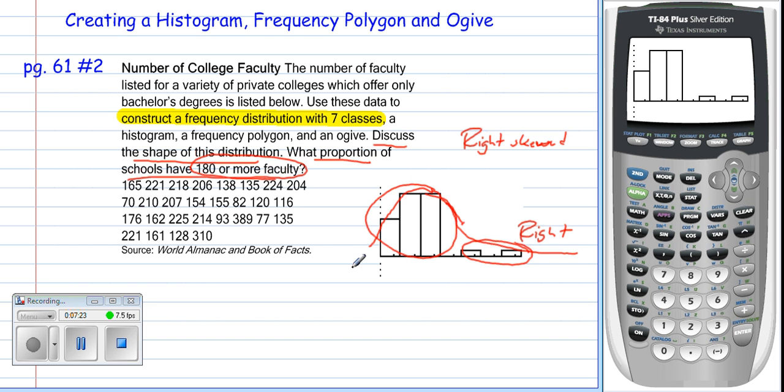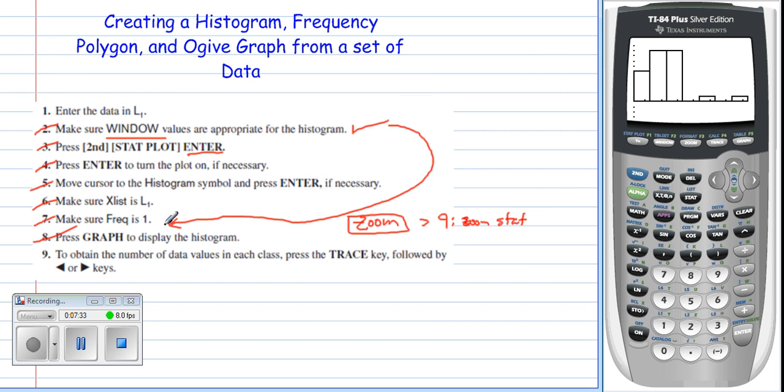So now we've discussed what that means. So now let's go to what proportion of the school has 180 or more faculty. That takes us back to number 9. They want us to press the trace key. So when I press the trace key, what that does for me is it says in this first bar of the histogram, our lower class limit is 70, our upper class limit is 123, and there are 6 items in this set. This one says, second class, 123 to 176, there's 10 items in that class. I just keep using my side to side arrow to keep cruising across.